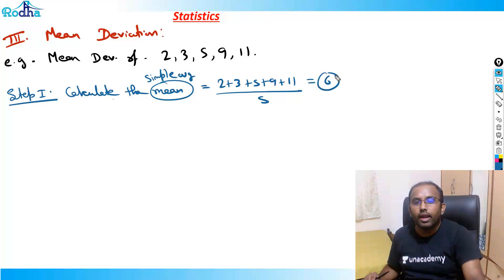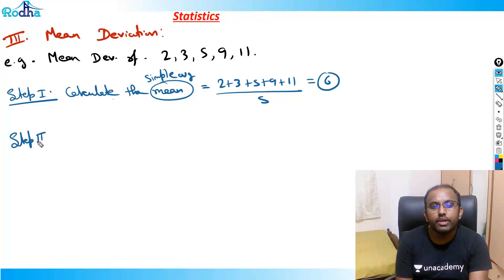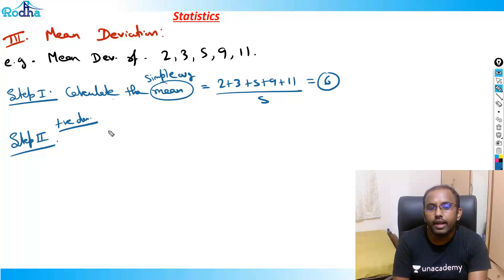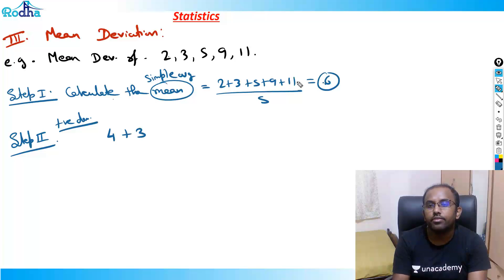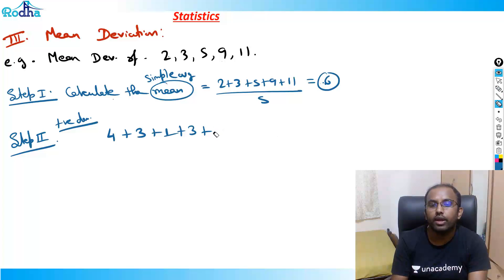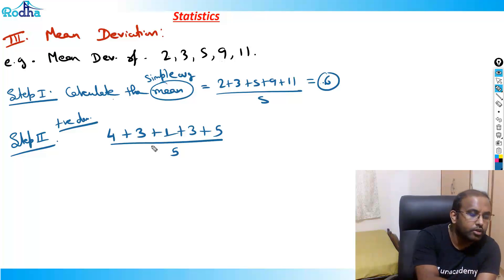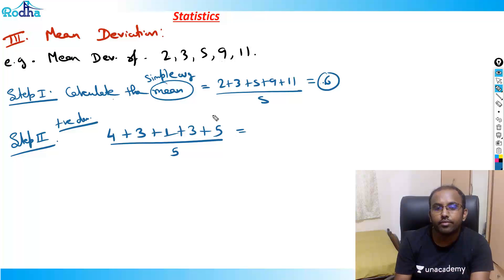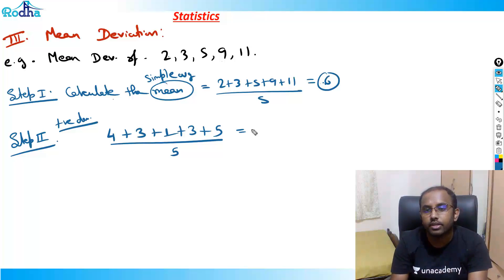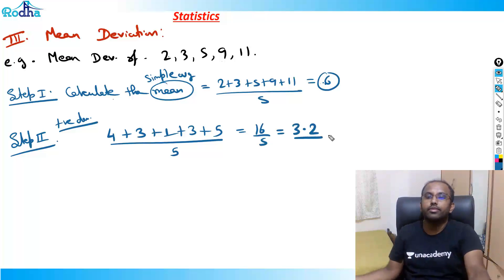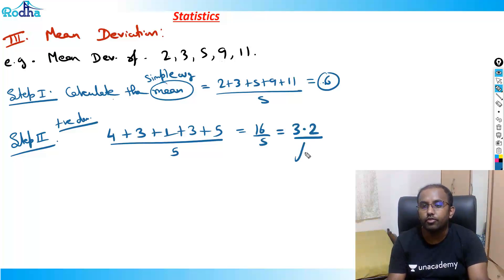Step 2: take the absolute deviation of each term from the mean (6). |6−2|=4, |6−3|=3, |6−5|=1, |6−9|=3, |6−11|=5. Sum = 16. Mean Deviation = 16/5 = 3.2.